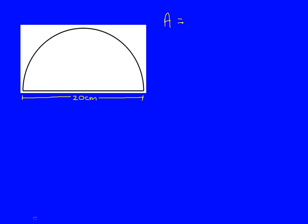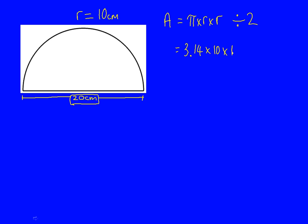Firstly, if this is half a circle and this bottom line is the distance across the whole circle, then the radius is half of this — so the radius is 10 centimetres, because it's half of 20. To find the area, we start with our formula pi times r times r, but because it's only half of a circle, we're going to divide it by 2. Put in our numbers: 3.14 times 10 times 10, then divide that answer by 2. The area of the full circle would have been 314, but dividing by 2 gives us a final answer of 157 centimetres squared.